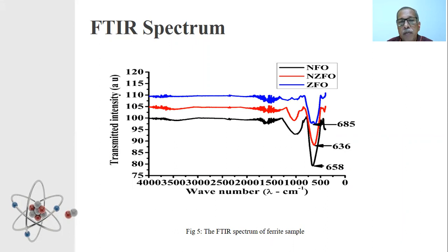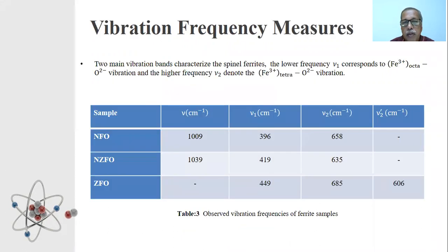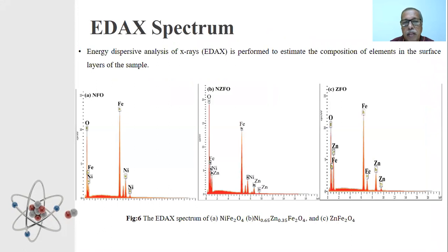FTIR is a technique to confirm the functional group present in the material. In ferrite, metal oxide is the functional group. The vibration frequencies correspond to this functional group are analyzed to confirm the formation of ferrite in the system. The observations are tabulated here. 396, 658, 419, 635, 449, 685 are the observed vibration frequencies corresponding to metal oxides and the result is in agreement with the standard reference.